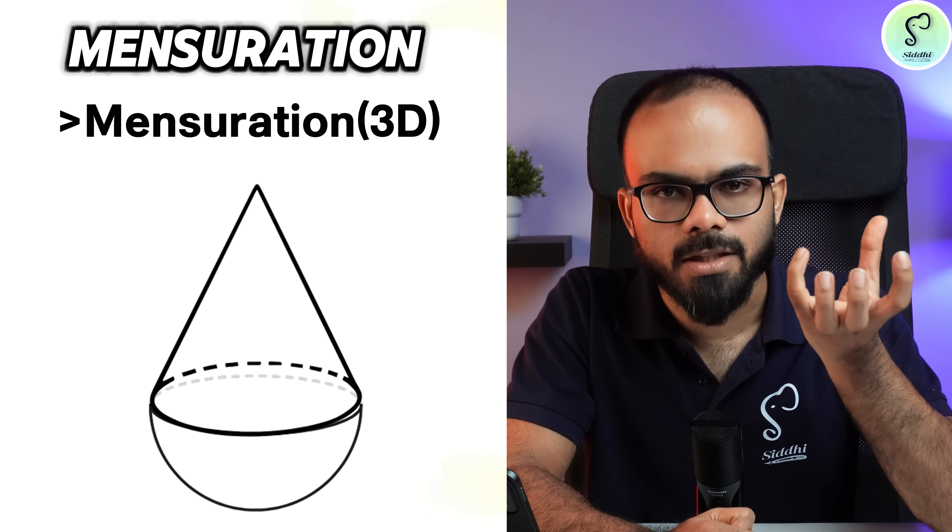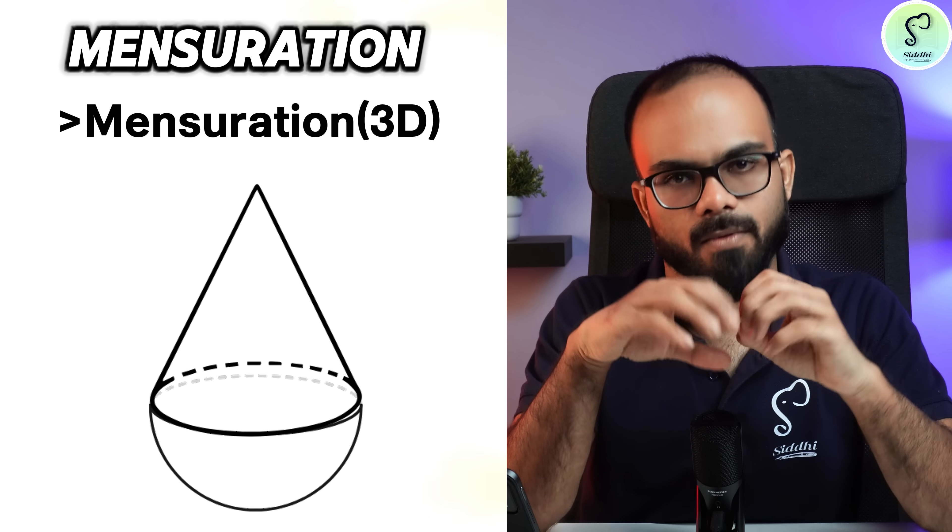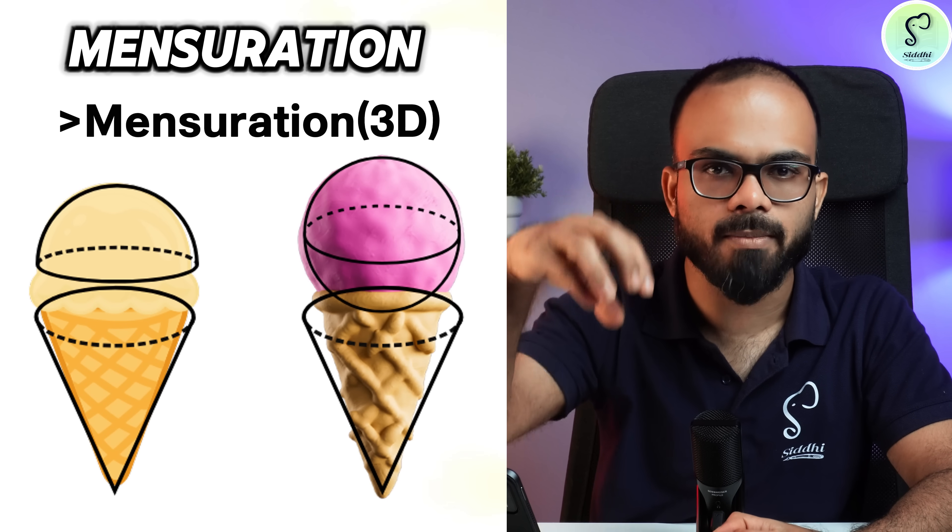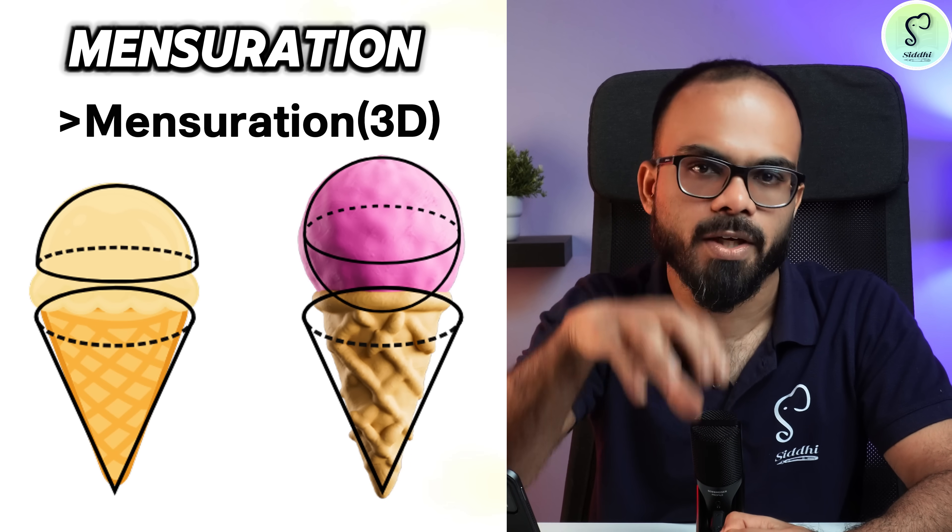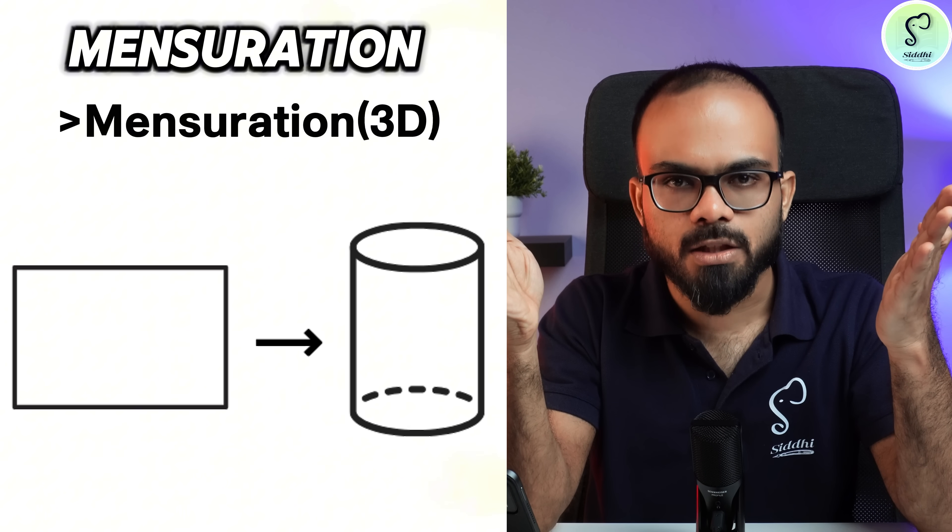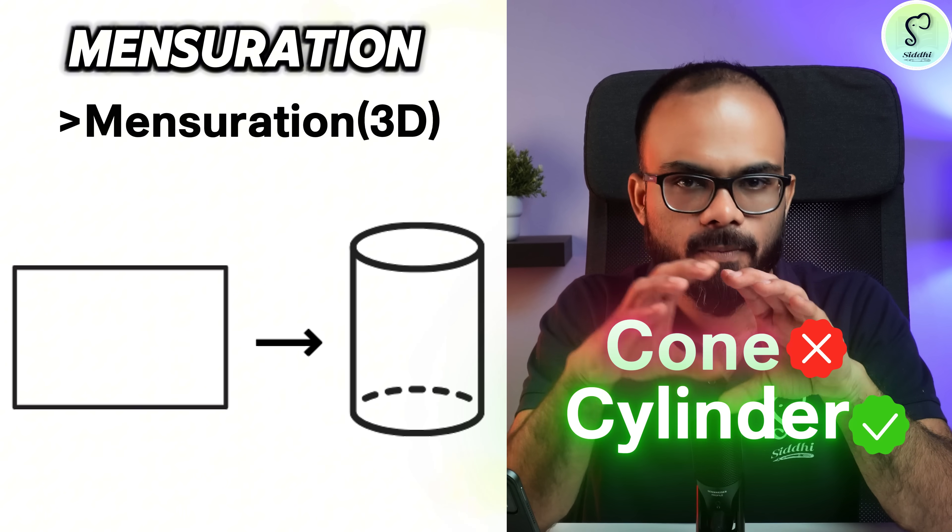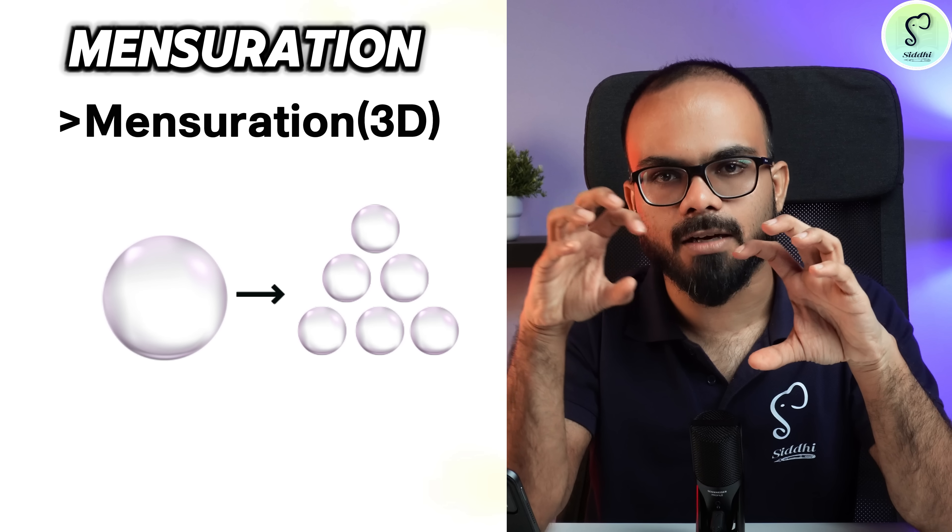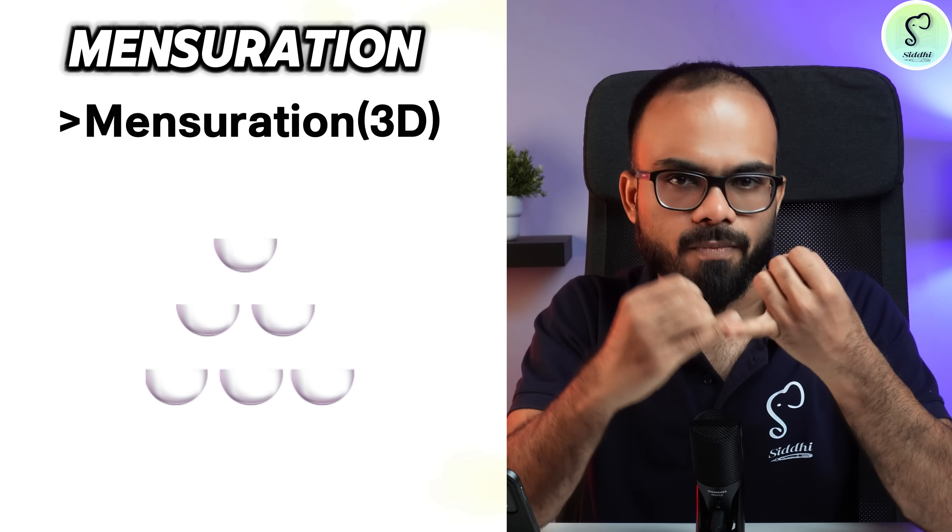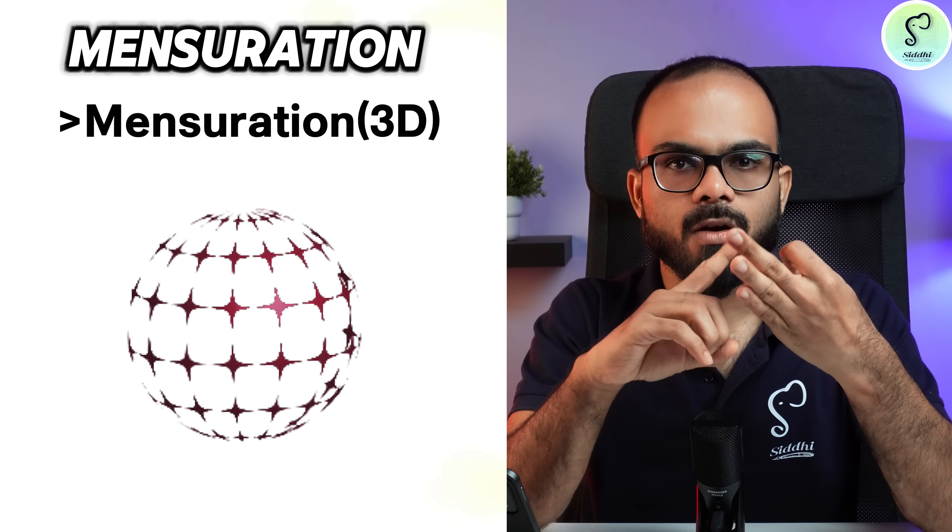Then a hemispherical bowl with a cone on top of it, or an ice cream cone with spherical or hemispherical ice cream on top and concepts related to this. Spheres are melted and made into smaller spheres, hemispheres, hollow cylinder, hollow sphere.